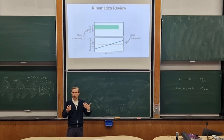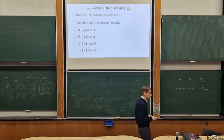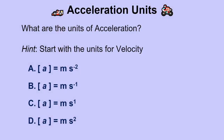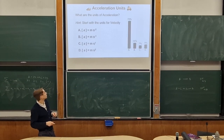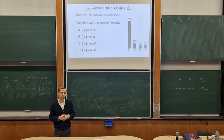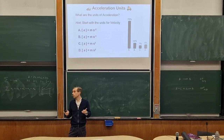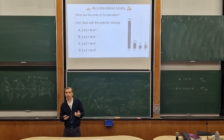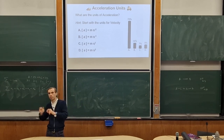Let's move on and think about acceleration - the next crucial piece of the puzzle. Let's start by thinking about what the units of acceleration are. Hint: start by thinking about the units of velocity, and remember that acceleration is how much velocity changes with time. Looking at the responses, most people are going for option A. The units for velocity are meters per second, written as meters seconds to the minus one. Acceleration is how much that changes, so it's meters per second per second - meters per second squared, or meters seconds to the minus two.